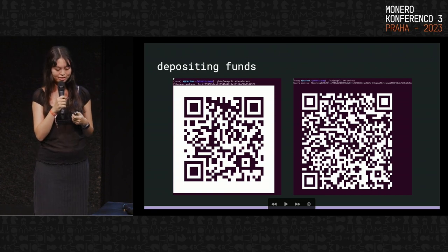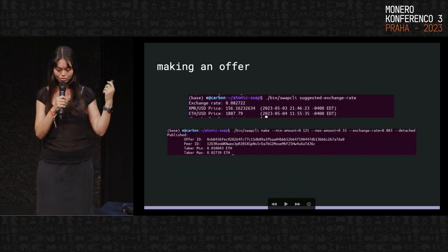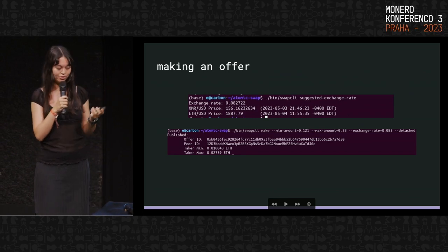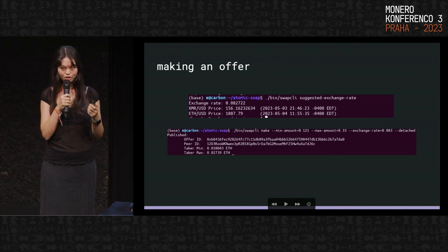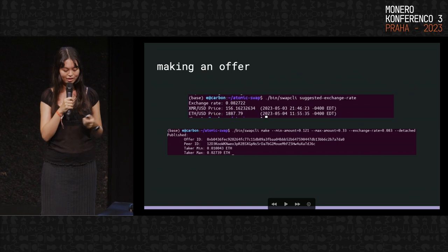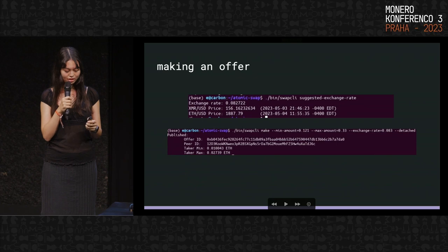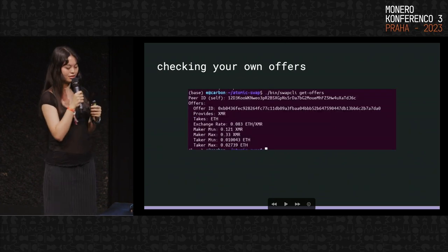There are also commands to withdraw easily, so it's basically like a whole wallet in the program as well. When you want to make an offer, you can just do 'swap CLI make' and then pass in your parameters — like how much you want to put as the offer, your exchange rate. The program also has a suggested exchange rate from an Oracle — obviously double check it, but it's there. Once you've made it, you can see the offer ID and that kind of thing.